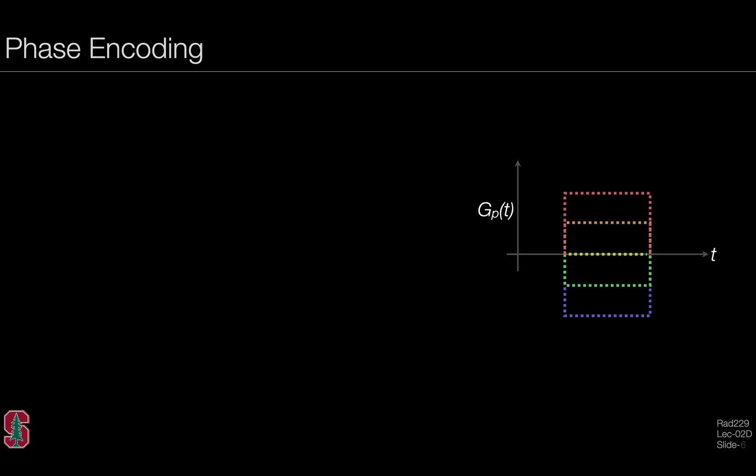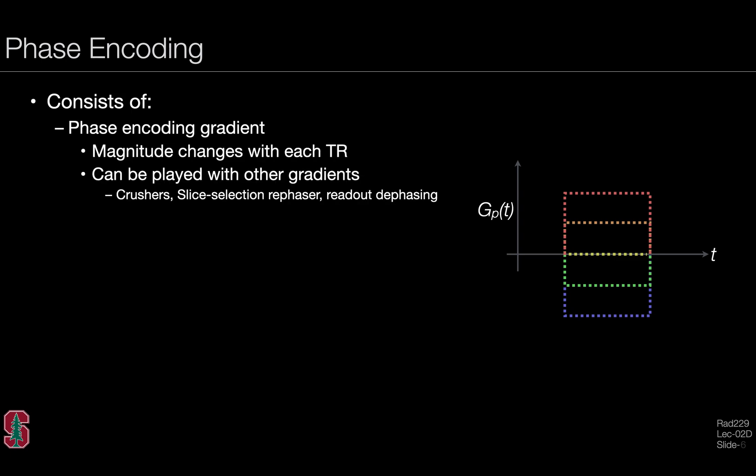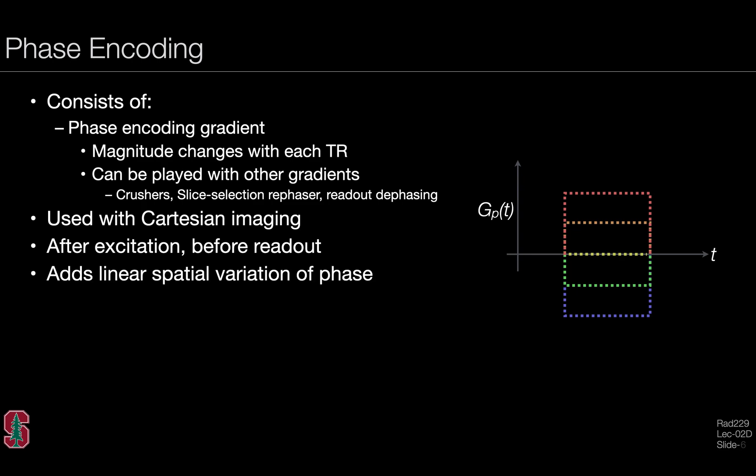Phase encoding consists of a phase encoding gradient, which is typically of a magnitude that changes with each TR. It can be played out with other gradients, which include things like crushers, slice selection rephasers, or readout dephasing gradients. Here on the right-hand side is a diagram of five phase encoding steps, going from a high positive encoding gradient to a low negative encoding gradient. This is conventionally used with Cartesian imaging, and it occurs after excitation, after the slice has been excited, but before readout, before the data is acquired. It adds a linear spatial variation of phase across the image. You can do phase encoding in one direction for two-dimensional imaging, or if you excite a fixed slab, you can use phase encoding in two directions for true inherent three-dimensional imaging.